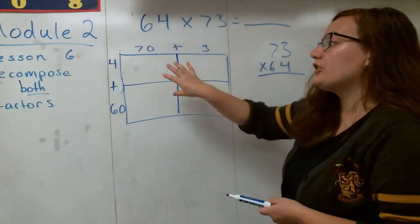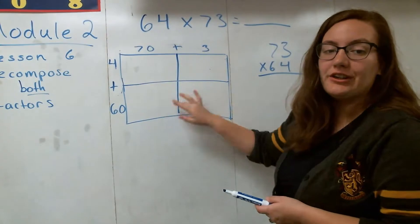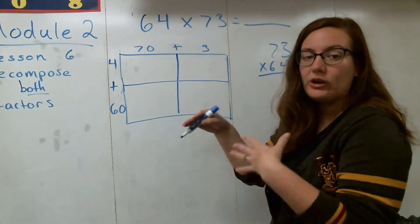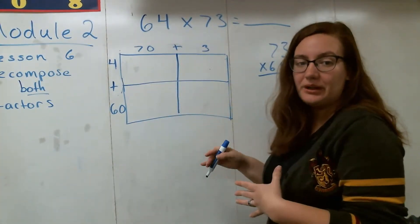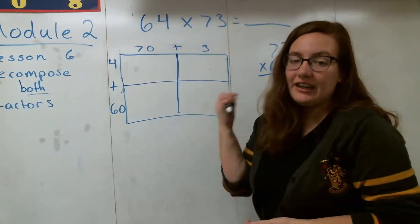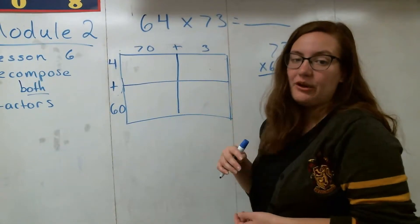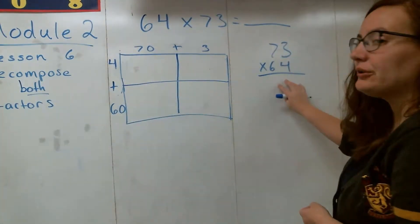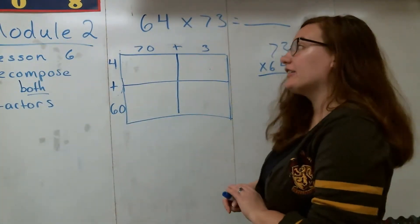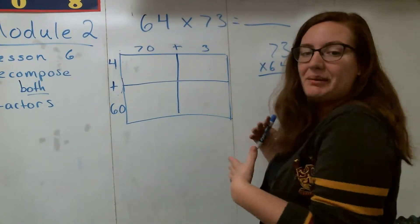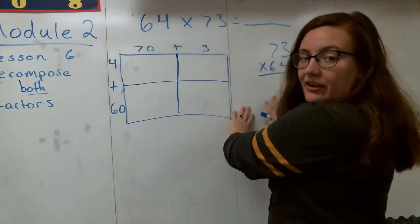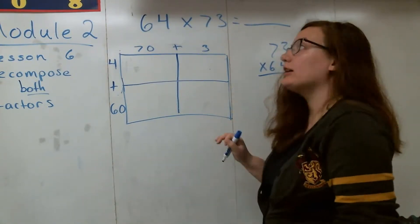What we're doing right now is we're using the area model to help us break down these numbers into smaller bits that are easier for us to multiply, and then we'll connect that to our standard algorithm to give us a behind-the-scenes look of what's happening.